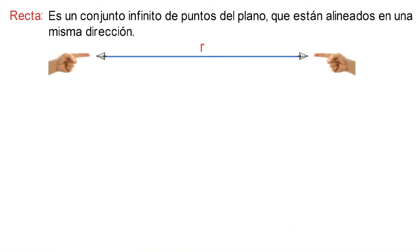Es frecuente que se diga comúnmente que una recta no tiene principio ni fin, porque no tiene un primer y un último punto. Además, siempre que quieras o necesites determinar una recta en un plano, necesitarás como mínimo dos puntos que la definan.